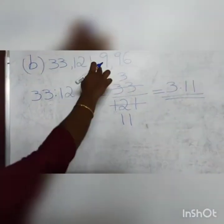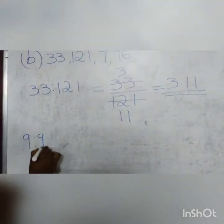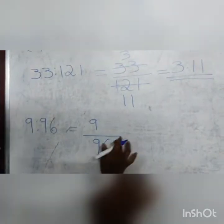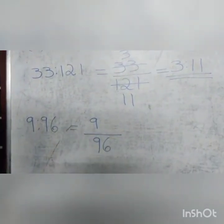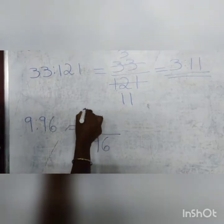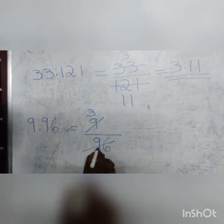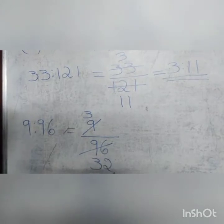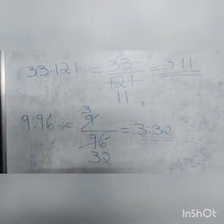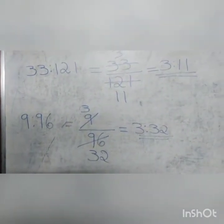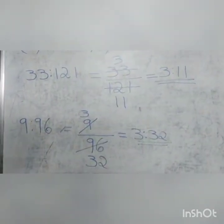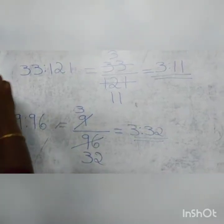Next, we find the ratio of 9 is to 96, which can be written as 9 by 96. Both 9 and 96 are divisible by 3. We can divide both numerator and denominator by 3. Since 3 threes are 9, we write 3 here. And 3 thirty-twos — we get 32 here, so the ratio becomes 3 is to 32. Looking at both ratios, it is clear that both ratios are different: the first is 3 is to 11 and the second is 3 is to 32. Hence, we can conclude that these ratios are not in proportion.